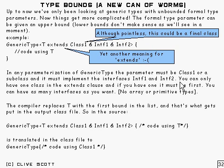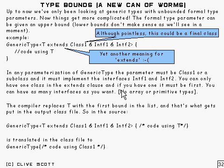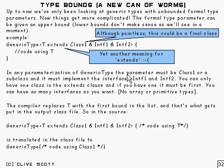There are a couple of rules that apply. You can only have one class in the extends clause, which makes sense because you can't inherit from two different classes — unless one is a subclass of the other, which makes it fairly redundant. So you can only have one class in the extends clause, and if you have one, it's got to be first in the list. You can have as many interfaces as you want, or none at all. And you're not allowed to have array types or primitive types in here.